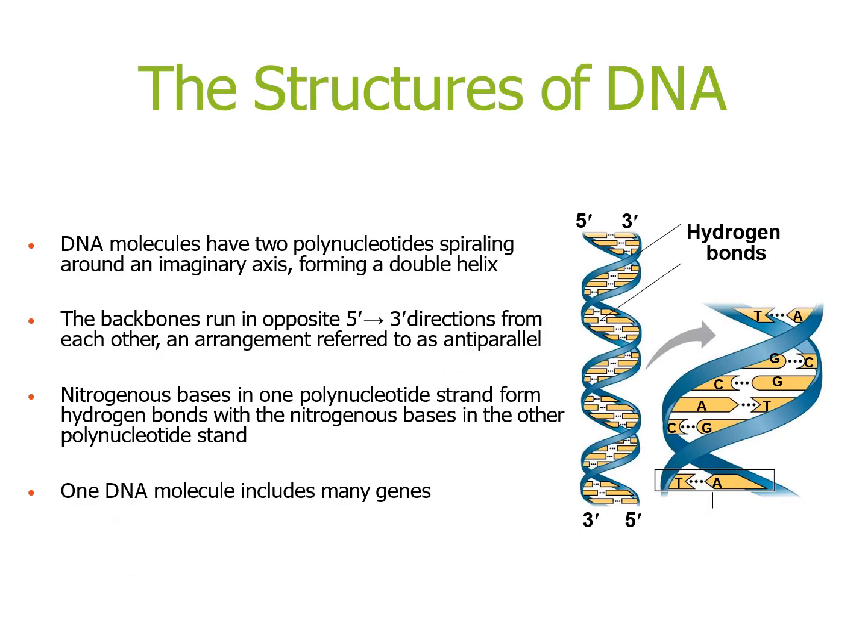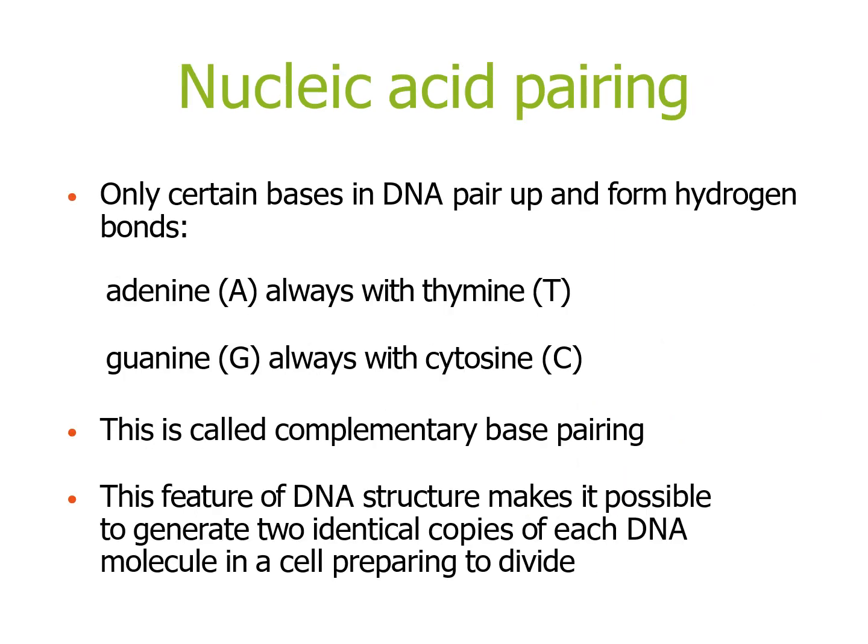DNA molecules have two polynucleotides spiralling around an imaginary axis, forming a double helix. The backbones run in opposite 5' to 3' directions from each other — an arrangement referred to as anti-parallel. Nitrogenous bases in one polynucleotide strand form hydrogen bonds with the nitrogenous bases in the other strand. One DNA molecule can contain many genes. In nucleic acid base pairing, only certain bases pair up and form hydrogen bonds: adenine pairs with thymine and guanine pairs with cytosine, in a process called complementary base pairing.